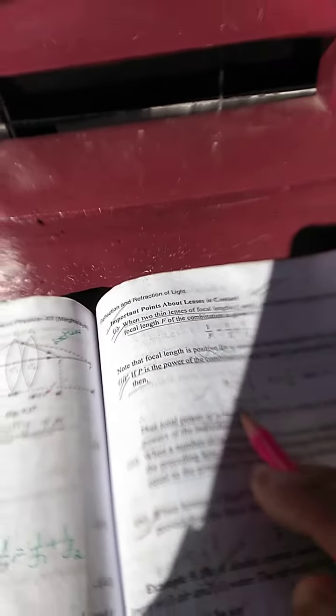Total power of a number of lenses in contact is equal to the algebraic sum of the powers of the individual lenses. You add all, then you are getting the total power of the lens.